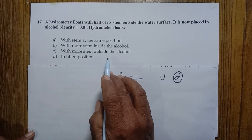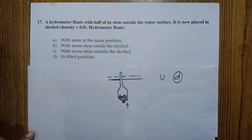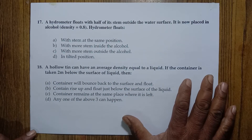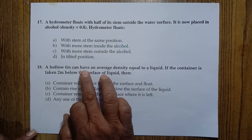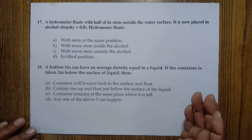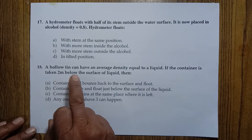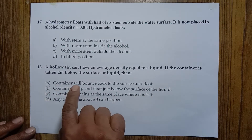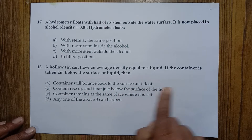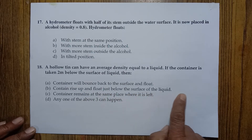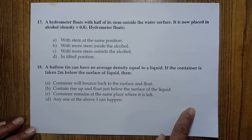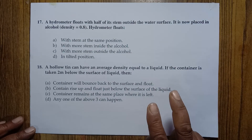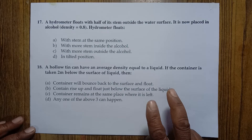Alcohol has a density less than water. If the density of a liquid is less, it exerts less upthrust, since upthrust depends on the density of the liquid. In alcohol, the upthrust is less, so more than half of the stem will emerge from the liquid. Therefore, option B — more stem inside the alcohol — is correct.